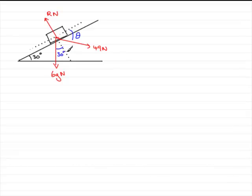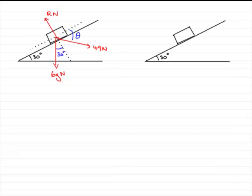We've got to show that cos theta equals 3 fifths. In order to do this, I'm going to show you another diagram — an equivalent diagram — which you don't really have to draw, but I think it might be useful. We're going to look at the forces acting perpendicular and parallel to the plane, and this problem is going to involve resolving forces.